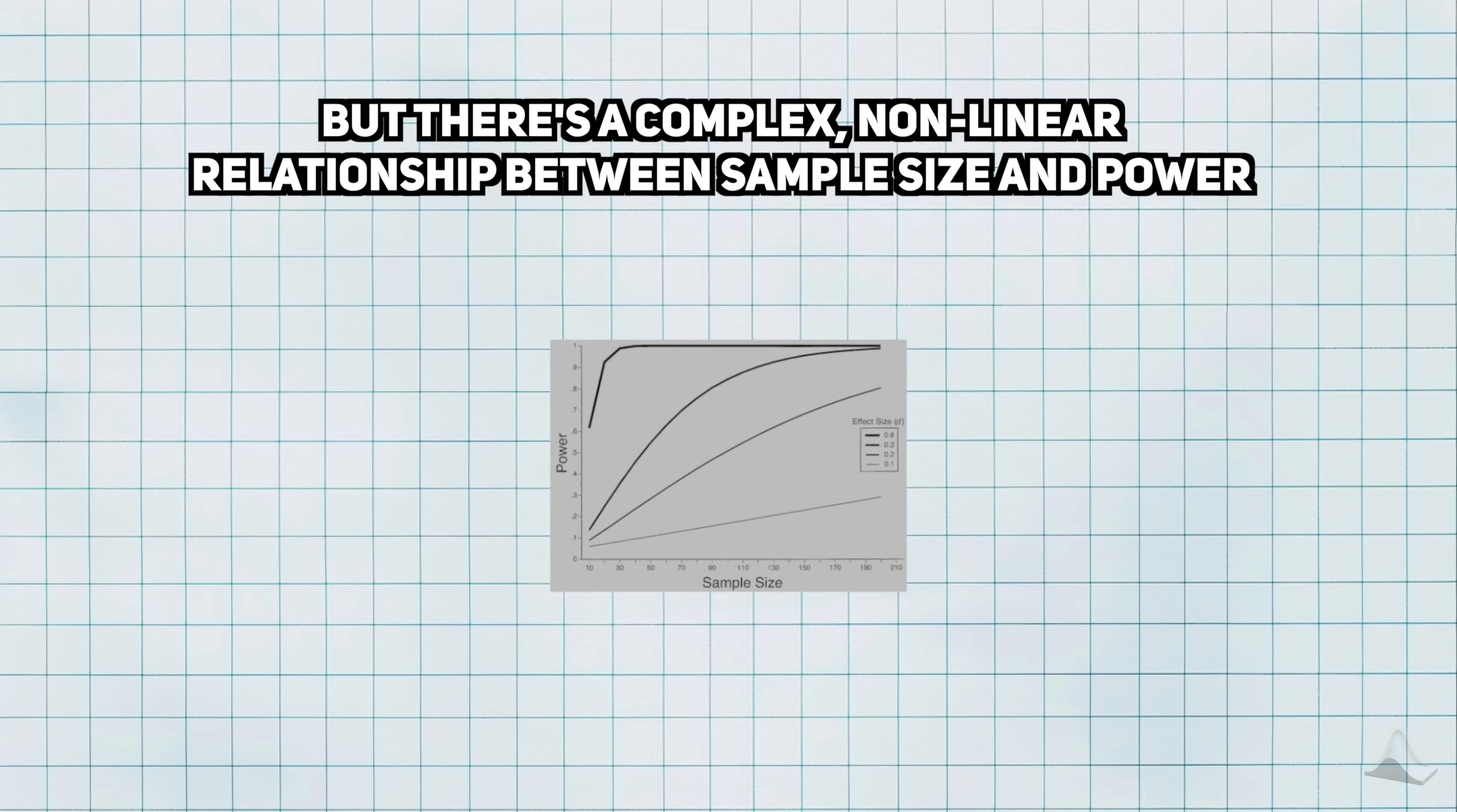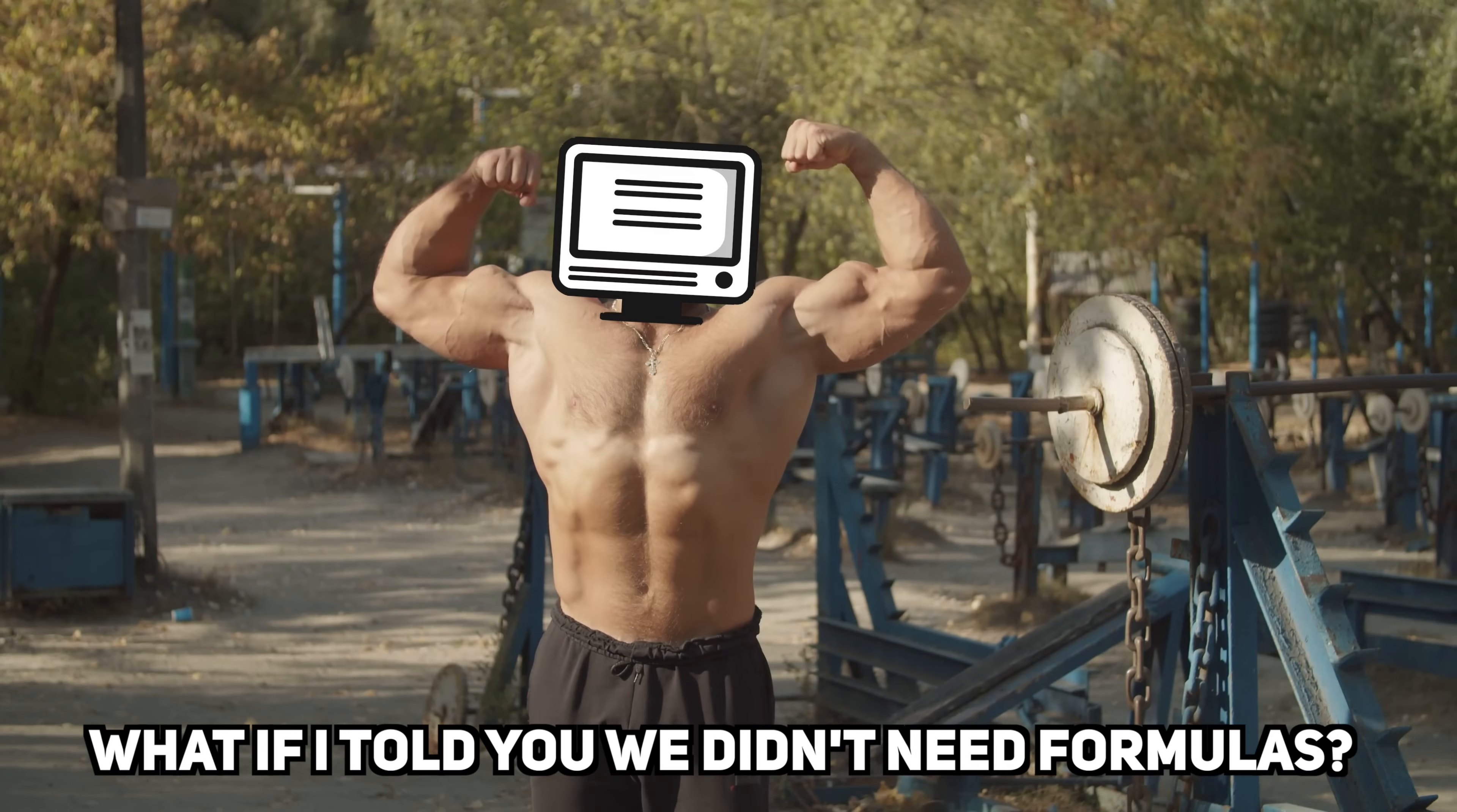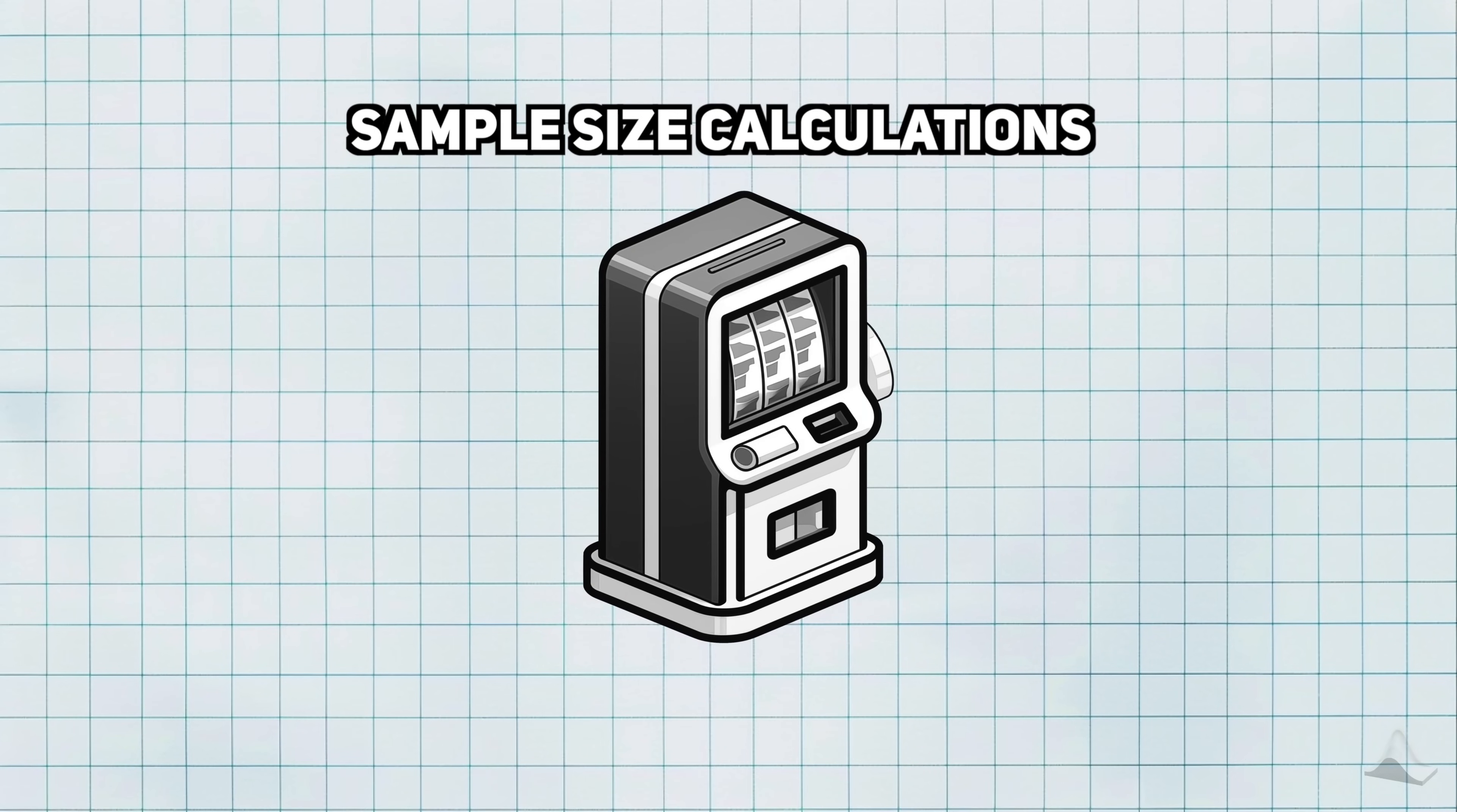The name of the game is to try to pick a sample size that will give you a desired power, like 80%. What makes it hard to do is that there's a complex, non-linear relationship between sample size and power. There are formulas that solve for sample size for a few specific cases, but I'm not a fan of them, and I'm not going to cover them here. What if I told you we didn't have to use any fancy formulas, and that we could calculate sample sizes purely through raw computation? All we need to do is simulate the experiment through code and do it many, many times. That's right, we're going to do sample size calculation through Monte Carlo simulations.